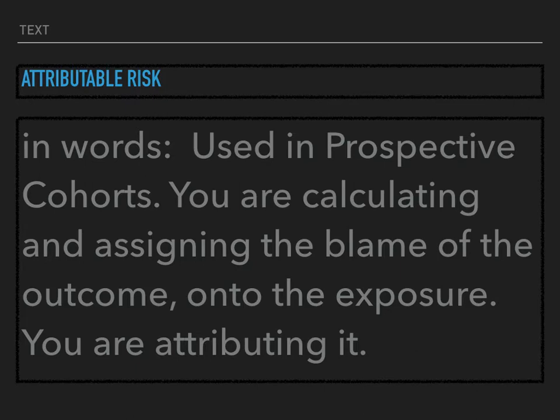Attributable risk — let's go over this in words. It's used in prospective cohort studies. You're calculating and assigning or attributing the blame of the outcome onto the exposure. How much of the outcome can you blame or attribute to the exposure?